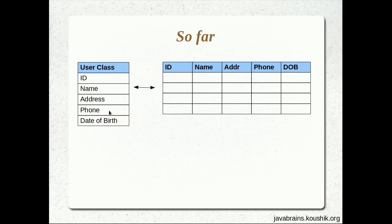Now the question is, what if one of these member variables were to be an object instead of just a simple data type which can fit into a column? Say one of these were an object, and that object had a few member variables inside of it, each of them having particular values. How would you save that using Hibernate? And what if one of them was an array, a list, or a set? How would we save that using Hibernate?